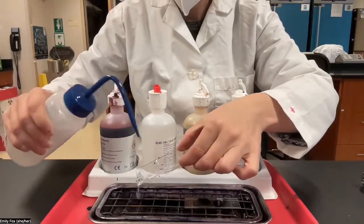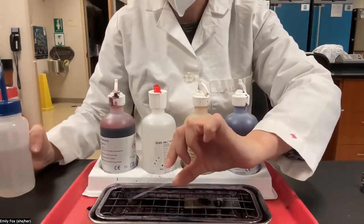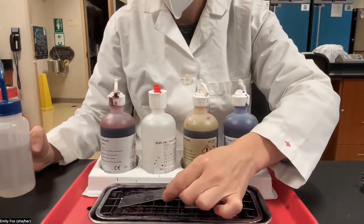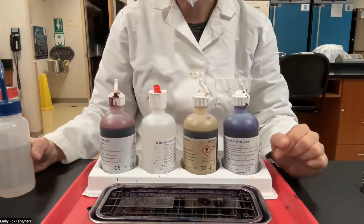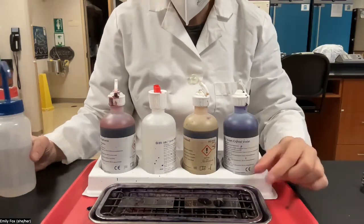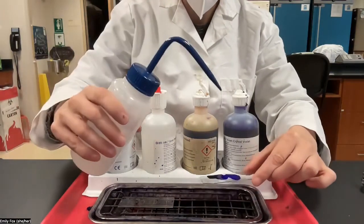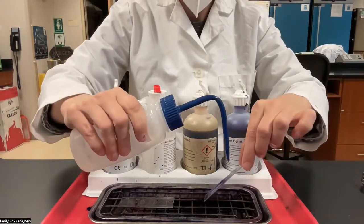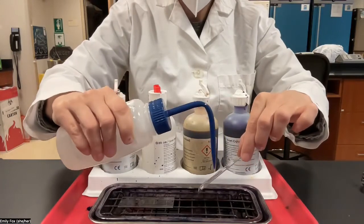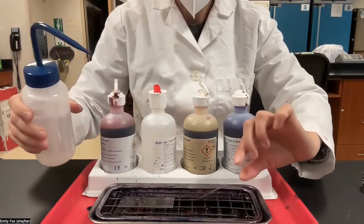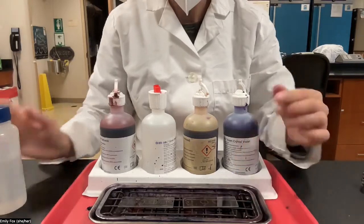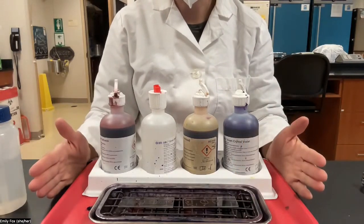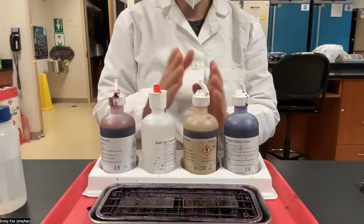Just rinse with water until it runs clear, and then you can tap it on the staining tray and lay it down gently. Let's rinse the other one. We don't need to dry in between our wash steps.